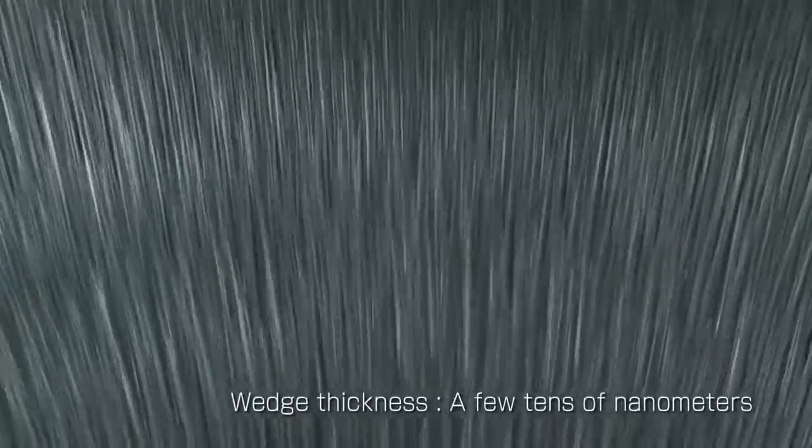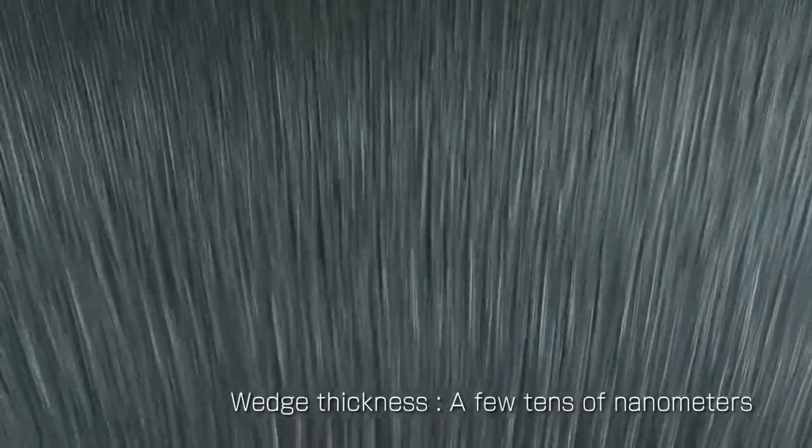Imagine countless wedges, aligned tightly together on the lens's surface. Each wedge measures only a few tens of nanometers thick, smaller than the wavelength of visible light.